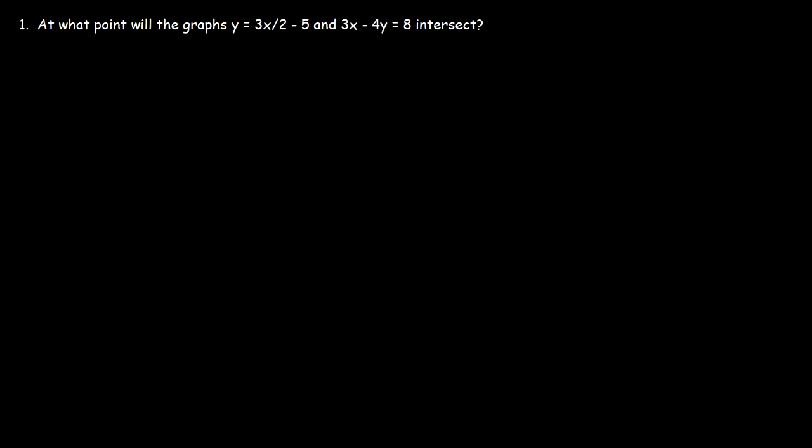Now there's two ways in which we can do so. The first method is simply to graph both linear equations and see where they intersect. The other one is to solve this as a system of equations and get x and y, and that will be the point of intersection. We're going to use both methods to confirm our answer.